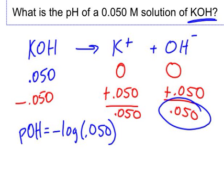So if I do that, the log of 0.050, and the POH ends up being 1.3. If that's not my final answer, I'm looking for the pH.